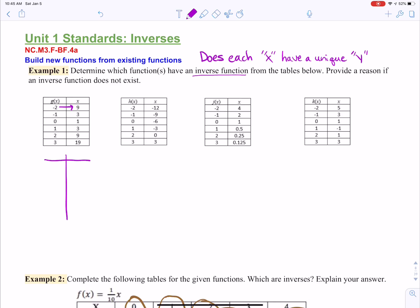So the inverse for g of x is if we take them and we switch them. So we're going to put nine negative two, three negative one, one zero, three one, nine two, and nineteen three.